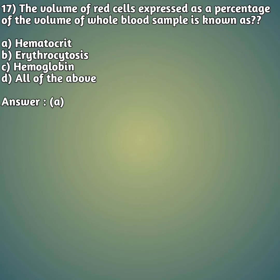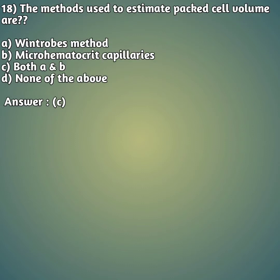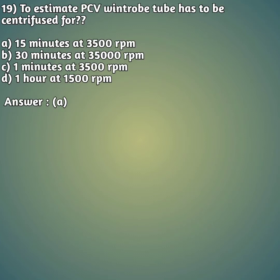Question 18: The methods used to estimate packed cell volume are — option A: Wintrobe's method, option B: micro hematocrit capillaries, option C: both A and B, option D: none of the above. The right answer is option C, both A and B. We use Wintrobe's method and also the micro hematocrit capillary method for estimation of packed cell volume, also called hematocrit.